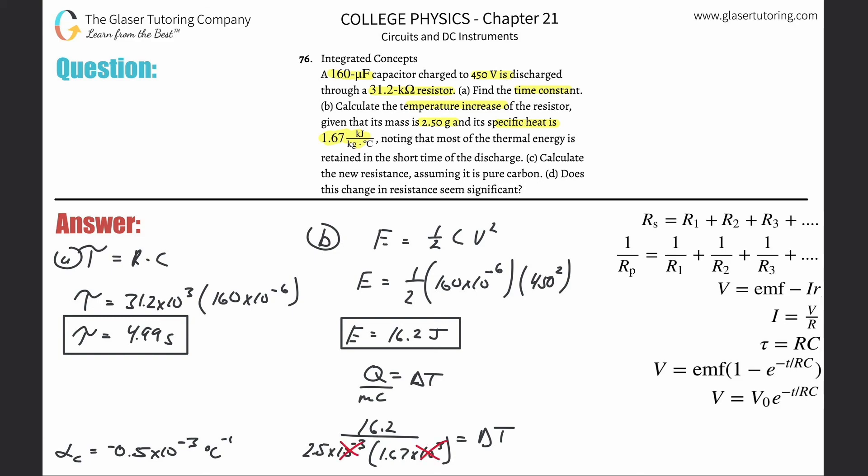Now if you realize, when you do all this, the 10 to the 3 and 10 to the minus 3 will just cancel. So 2.5 times 1.67, it comes out to be 3.88. So the change in temperature here is about 3.88 degrees Celsius.